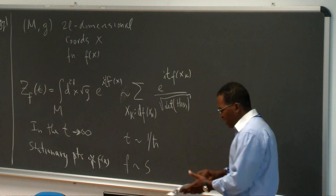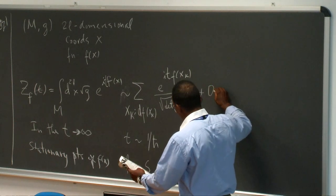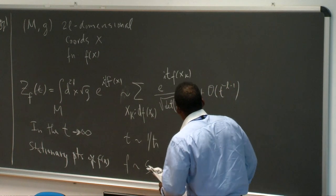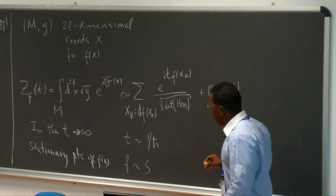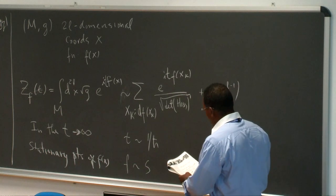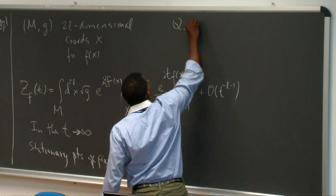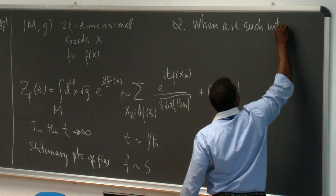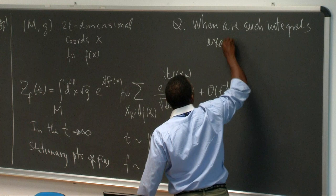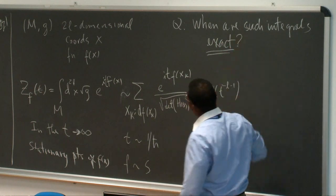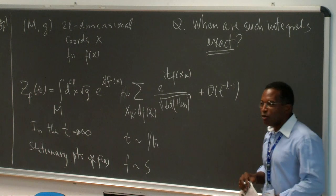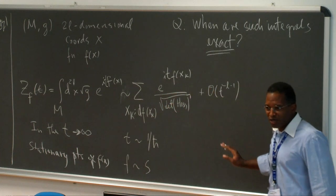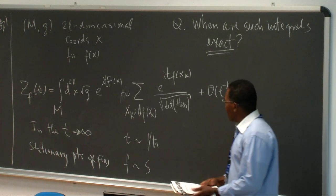So now we know what we want to understand. I want to understand exactly when such an approximation is exact — this will have corrections of order t to the minus (l minus 1) at least, in terms of the dimension of the manifold. My main question is: when are such integrals exact? I want to understand the mathematical machinery that will guarantee that when I compute something using the fixed points, that will be the full answer with no other corrections.